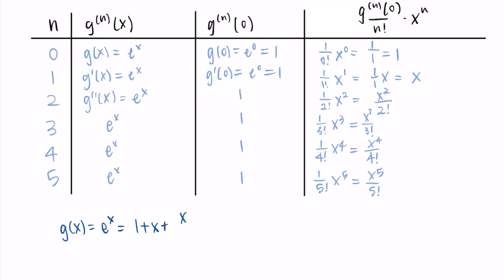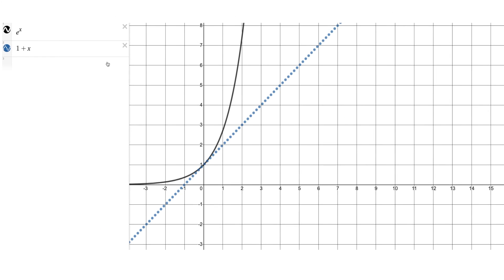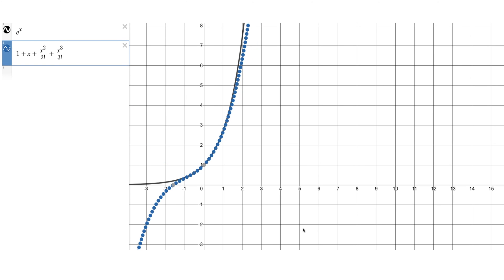We can write that e to the x equals one plus x plus x squared over two factorial plus x cubed over three factorial plus x to the fourth over four factorial, continuing infinitely. We write this compactly as the sum from n equals zero to infinity of x to the n over n factorial. This connects to a result from a previous video: the sum of one over n factorial equals e, because if we plug x equals one into this series we get one over n factorial — and that's why that statement is true.